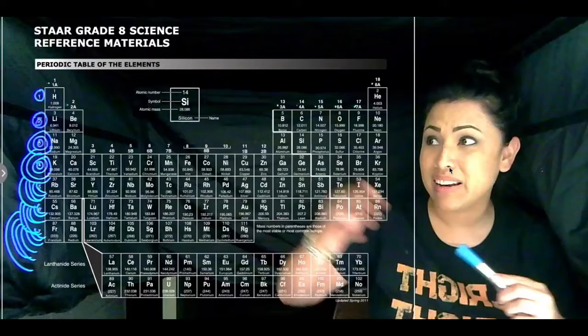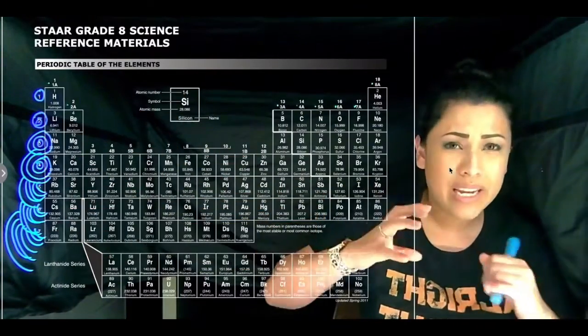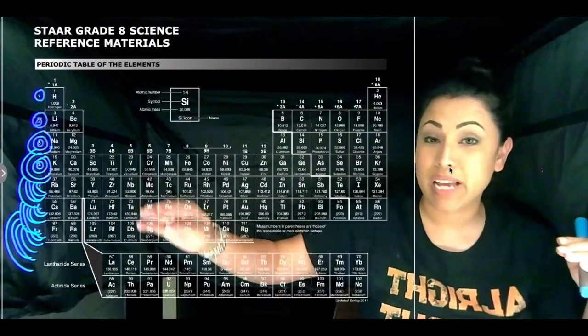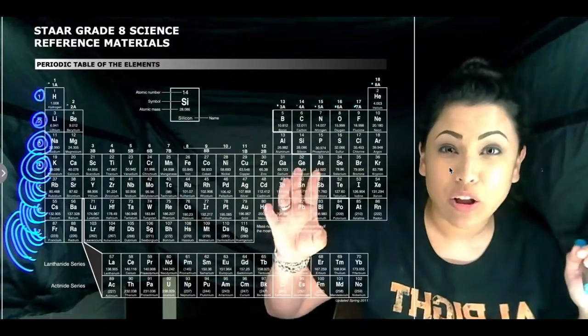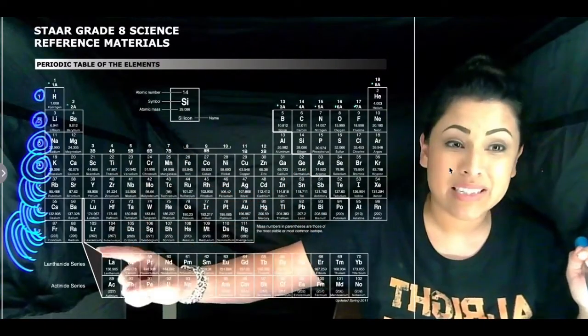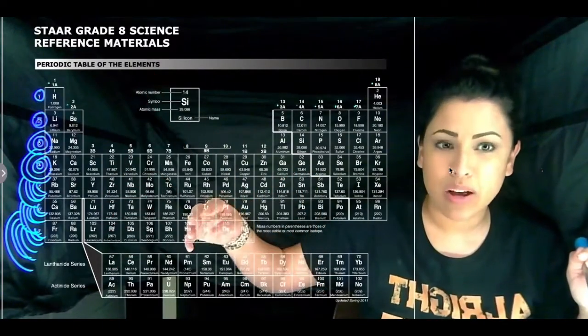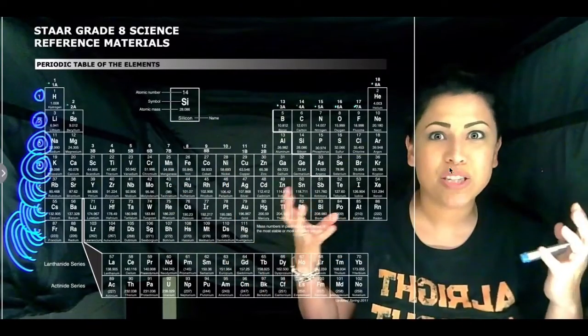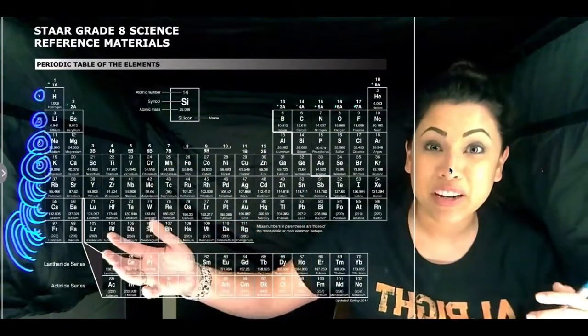So now you can also notice that the size of the rings are larger once you go down the periodic table. If you take a closer look and look at the masses of these elements as well, you'll notice that the mass is also increasing because the atoms are increasing.